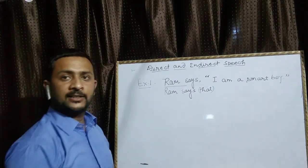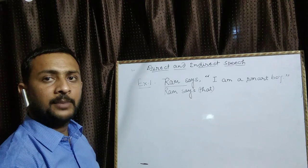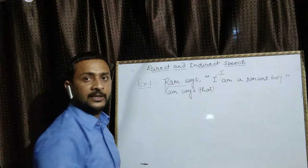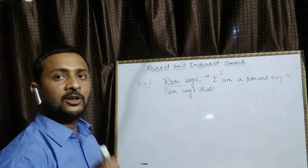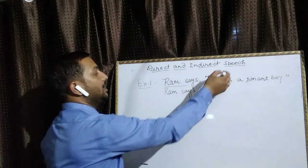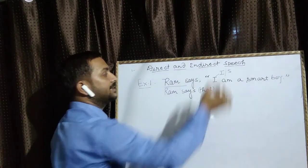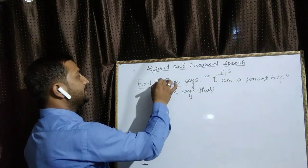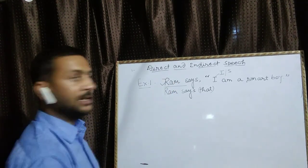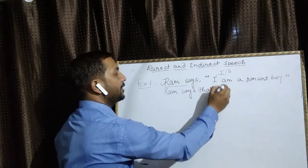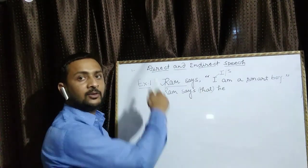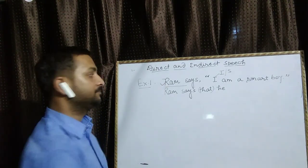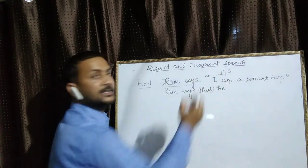I को change करते हैं — I is a pronoun, first person। First person को change करते हैं according to subject। Subject हमारा है राम — राम के लिए pronoun के रूप में 'he' लिखते हैं। अगर कोई girl होती है तो 'she' लिखा जाएगा। He लिखा।